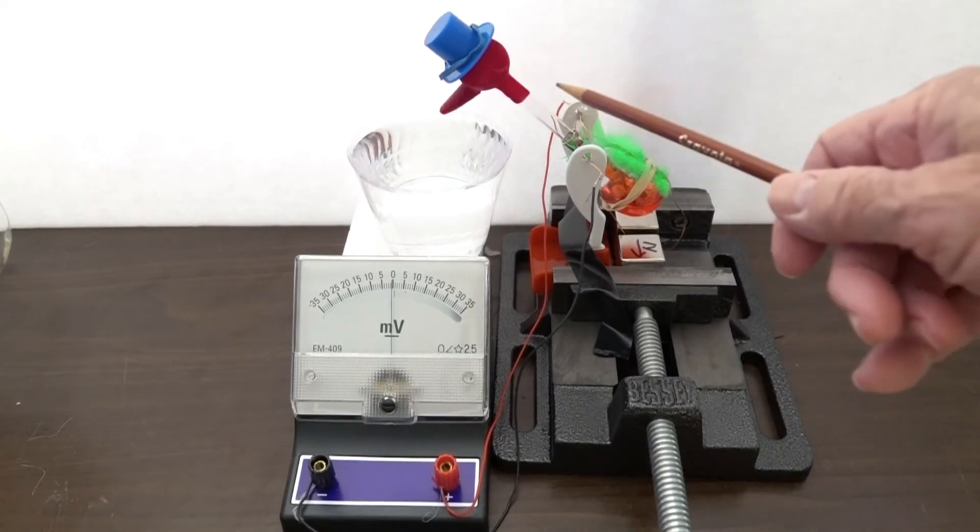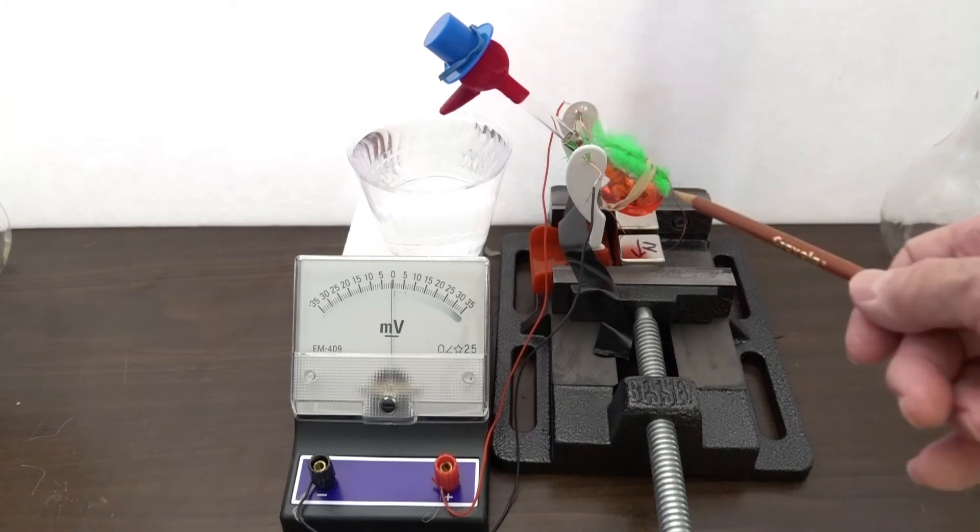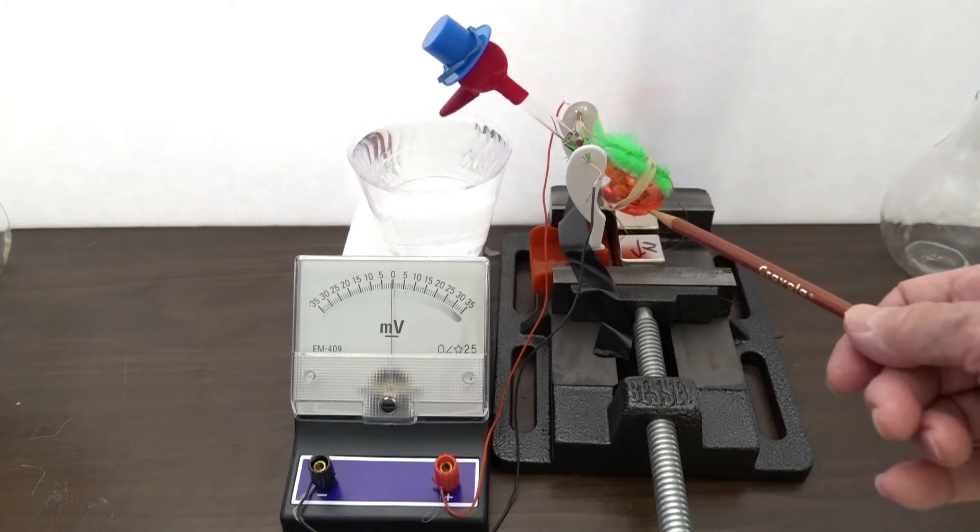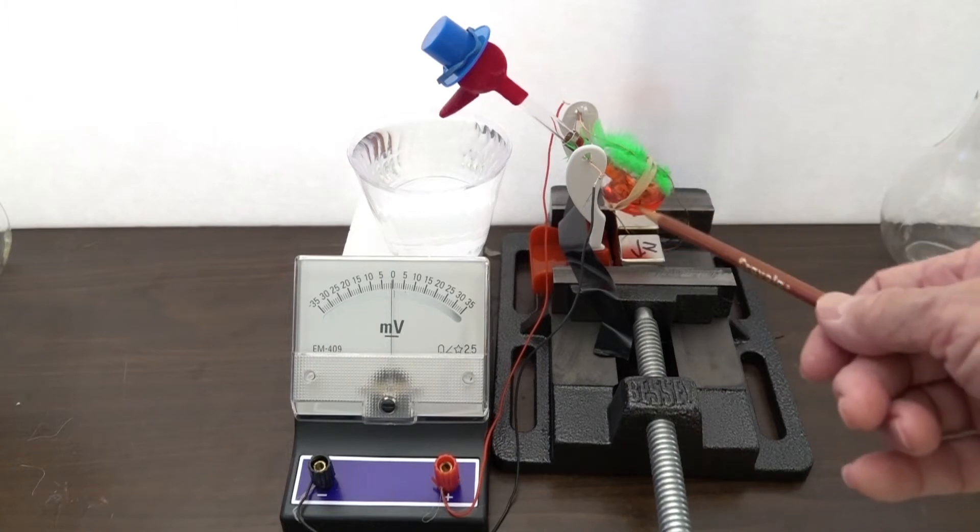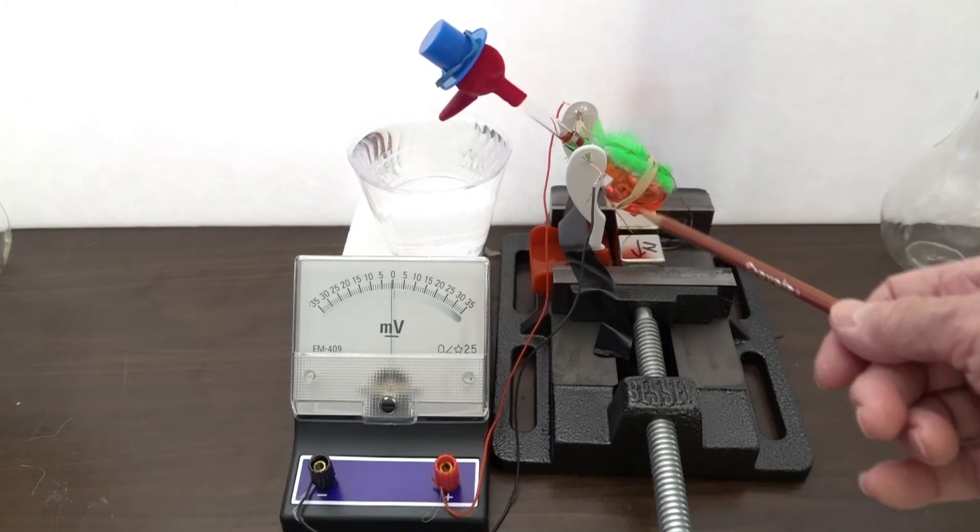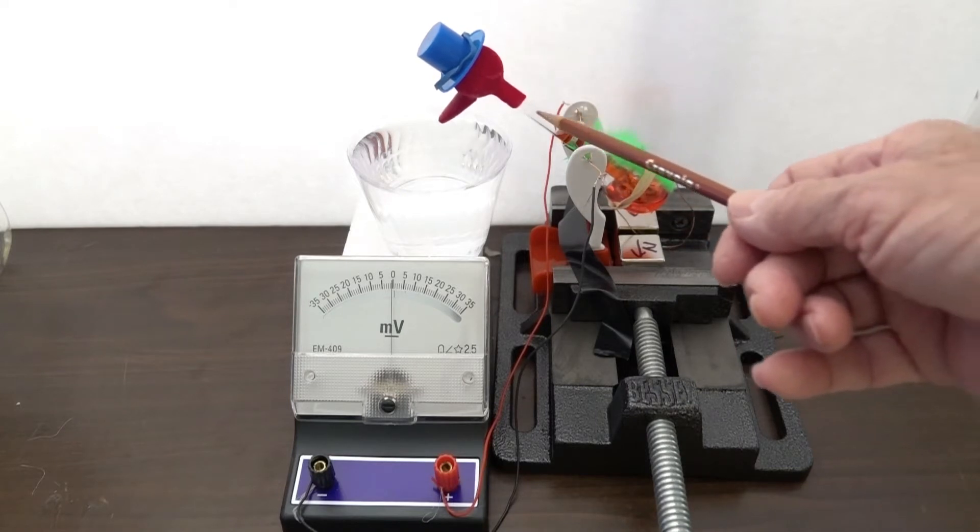This is just a standard drinking bird type heat engine filled with methylene chloride. The liquid picks up heat from the air and the vapor expanding pushes the methylene chloride liquid up the neck.